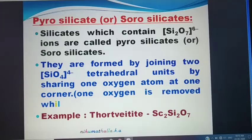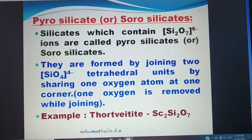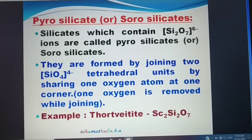They are formed by joining two SiO₄⁴⁻ tetrahedral units by sharing one oxygen atom at one corner. One oxygen atom is removed while joining. When two SiO₄⁴⁻ ions are joined, we get eight oxygen atoms, but one oxygen atom is shared by both SiO₄⁴⁻ ions and that oxygen is common to both tetrahedral structures.